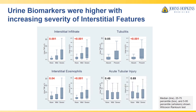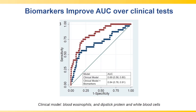Most importantly, acute tubular injury scores on histology were not associated with AIN, further proving that these are specific markers of immune-mediated kidney disease. When we add these biomarkers to clinical predictors, there is a gain in AUC of about 15 points — the AUC with the clinical model is 69% versus 85% with the biomarkers, showing significant improvement in discrimination. This improved discrimination can be used to either refute the need for biopsy or, in uncertain cases, make a strong case that biopsy will give a better answer.